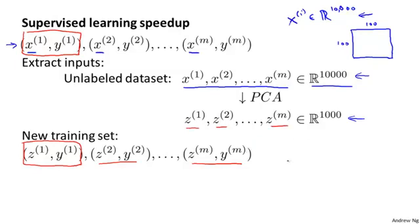Finally, I can take this reduced dimension training set and feed it to a learning algorithm, maybe a neural network or logistic regression. I can learn a hypothesis h that takes this input, these lower dimensional representations z and tries to make predictions. So if I were using logistic regression, I would train a hypothesis that outputs 1 over 1 plus e to the negative theta transpose z, that takes this input z and tries to make a prediction.